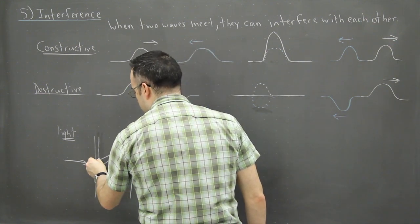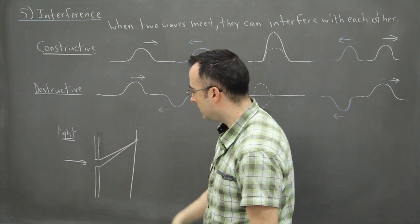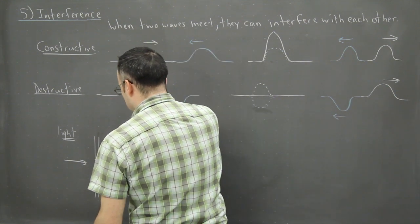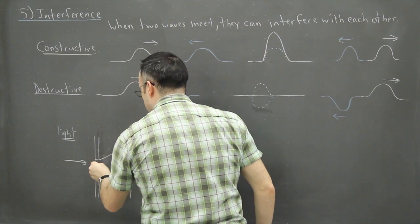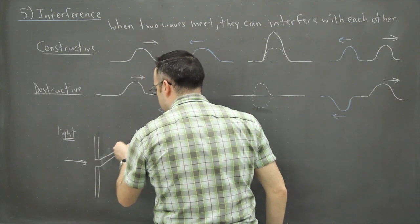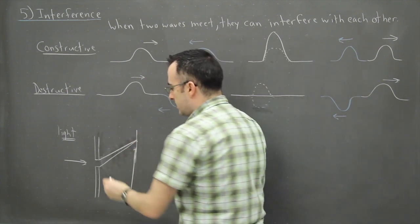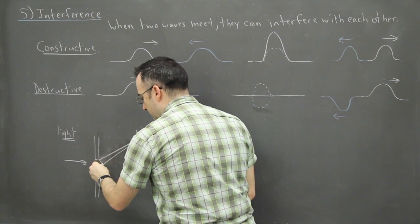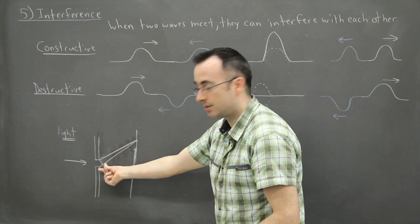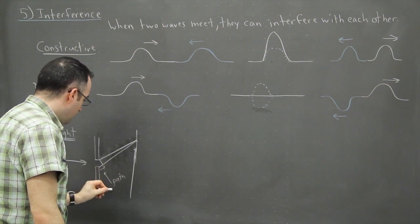The light from the top part didn't have to travel quite as far as the light from the bottom part. If these were parallel rays — because we're going to assume the screen is really far away — we would assume the rays are parallel. We can see the difference in path length: that extra distance the lower ray has to travel compared to the upper ray. We call this the path difference, because it had to go farther.